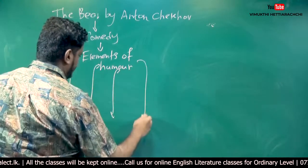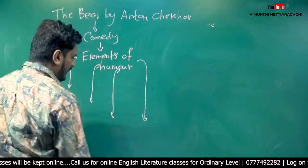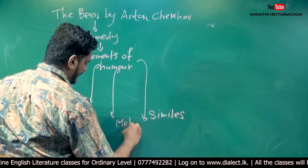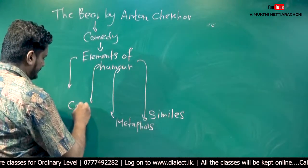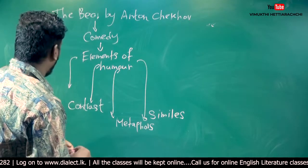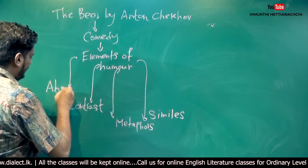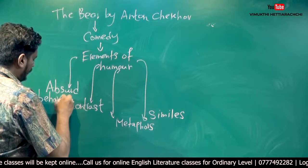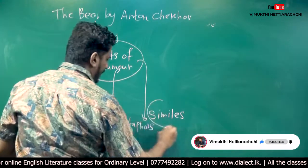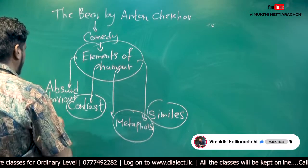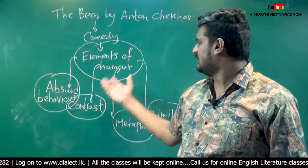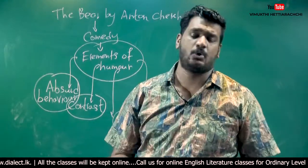In order to create this humor, the following dramatic techniques are used by the dramatist — these things are very important. Number one, we can see a lot of similes used by the playwright. There are also a lot of metaphors. Contrast is taken as a very powerful dramatic technique in the drama. The absurd behavior of the characters equally contributes to the humor. So we have similes, metaphors, contrast, and the absurd behavior of characters all contributing to the fun and humor of the drama.